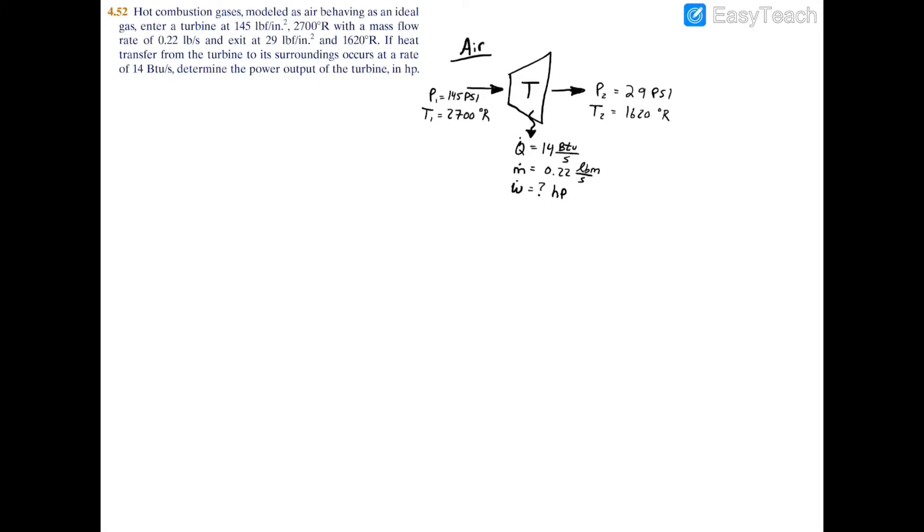Here we have a fairly simple problem where hot gases are entering into a turbine. We're told that we can treat these hot gases as an ideal gas, which is going to be air. We have the pressure and temperature on either side of the turbine, and then we're given the heat transfer out of the turbine in btu per second. We have the mass flow rate going in of the air going into the turbine, and we're going to be looking for the power in horsepower.